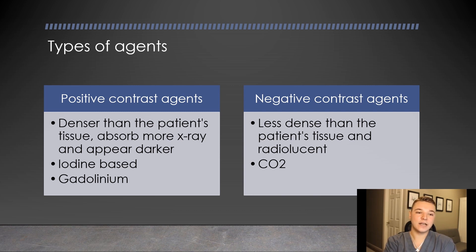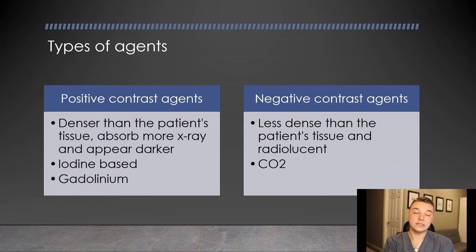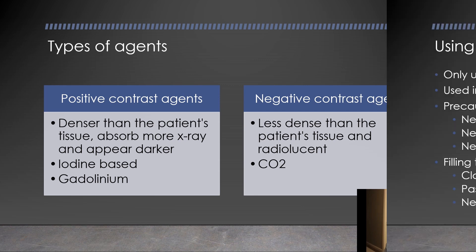Moving on to negative contrast agents, there's only one available — that's CO2, carbon dioxide. It's a gas and it is radiolucent, meaning it does not appear on x-ray. However, there is special equipment and technology used that makes the backdrop darker, and everything that's radiolucent shows up lighter on the imaging, therefore giving us a visualization of the vasculature.